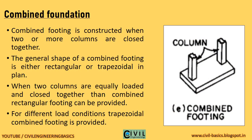Let's discuss combined footing. Combined footing is constructed when two or more columns are close together. See the diagram for the combined footing given here. The general shape of a combined footing is either rectangular or trapezoidal in plan. When two columns are equally loaded and close together, a combined rectangular footing can be provided. For different load conditions, a trapezoidal combined footing is provided when one column carries a different load than the second column.